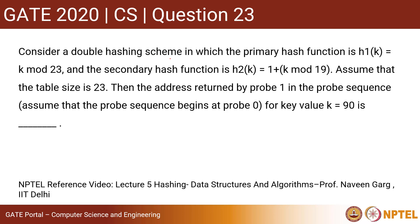Consider a double hashing scheme in which the primary hash function is h1(k) = k mod 23, and the secondary hash function is h2(k) = 1 + (k mod 19).